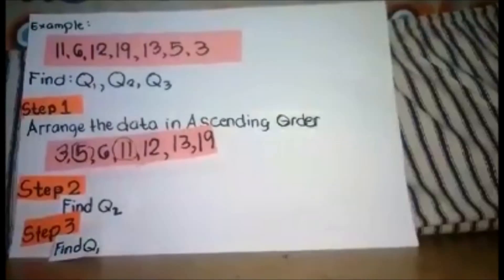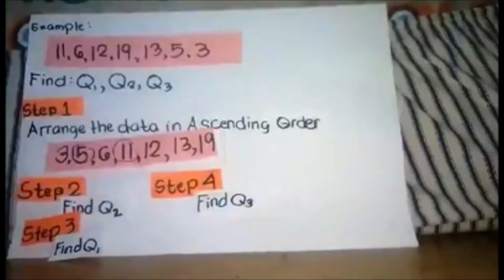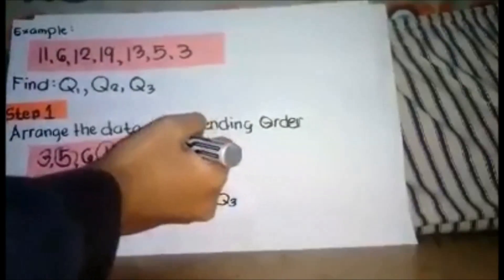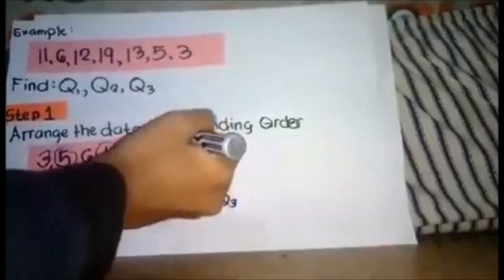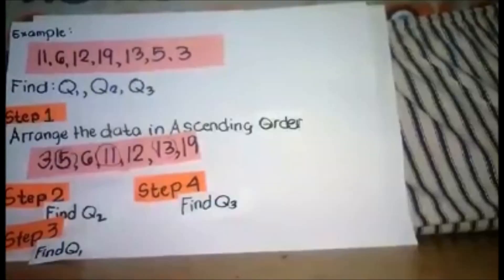Step 4, find Q3. It is found on the right side of the median. So counting: 1, 2, 1, 2. Our Q3 is 13. So it's done.